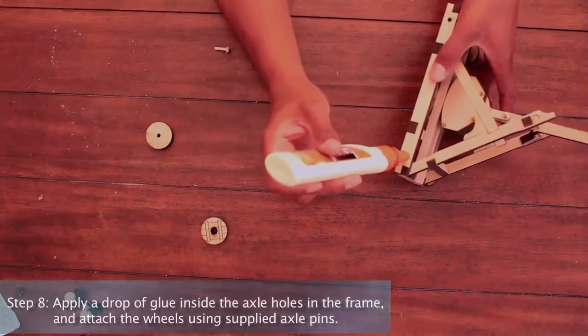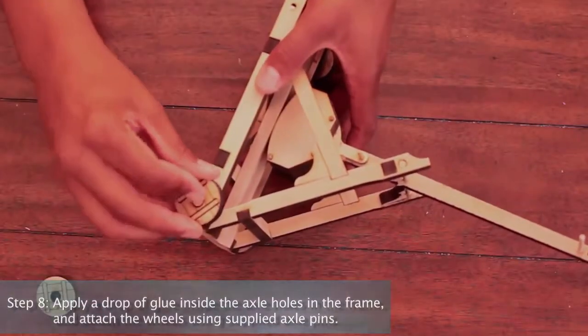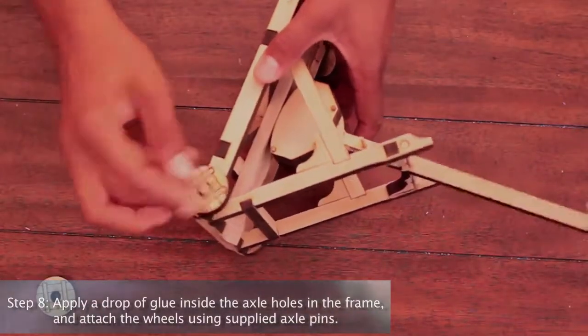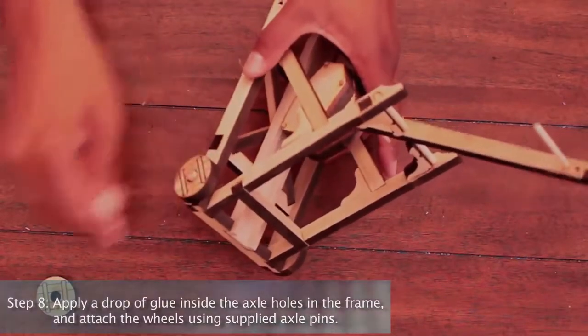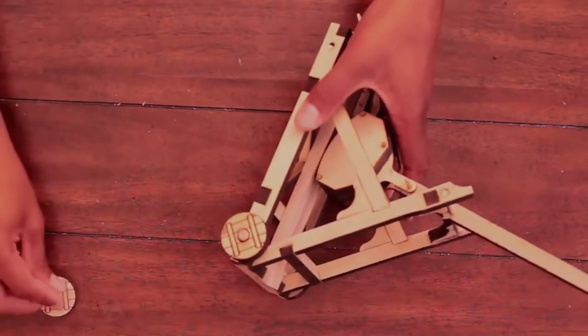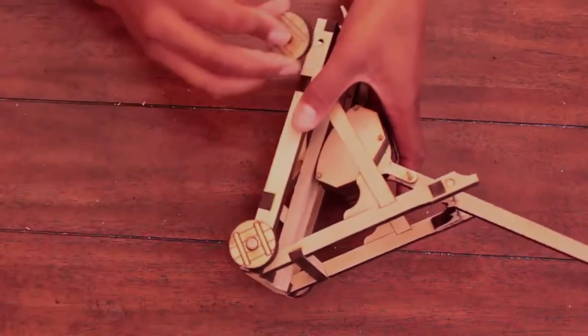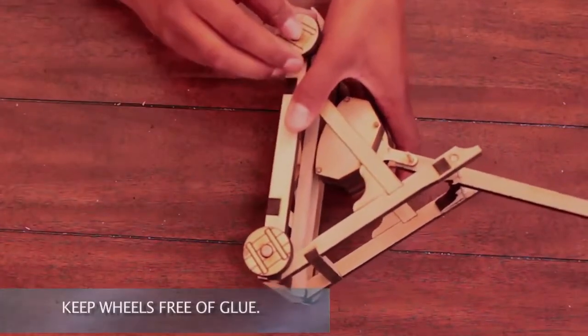Step 8: Apply a drop of glue inside the axle holes in the frame, and attach the wheels using the supplied axle pins. Ensure all wheels can turn easily. Keep wheels free of glue.